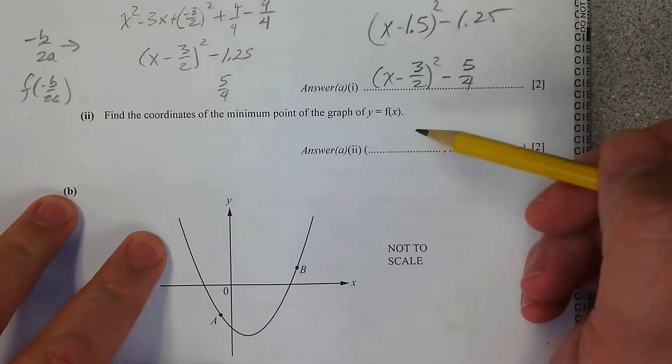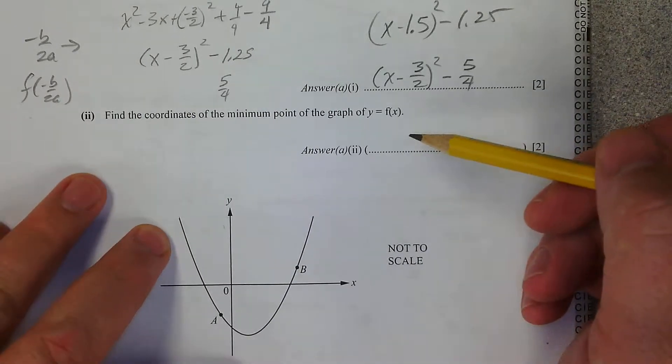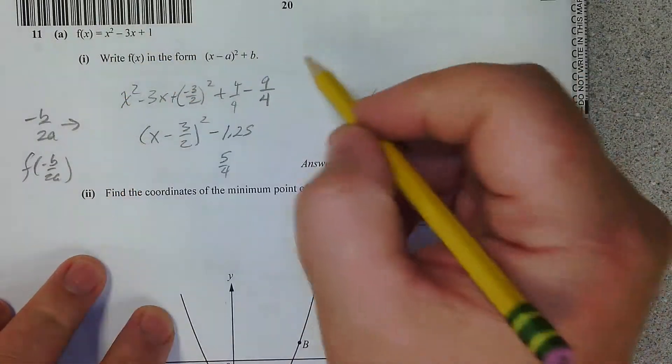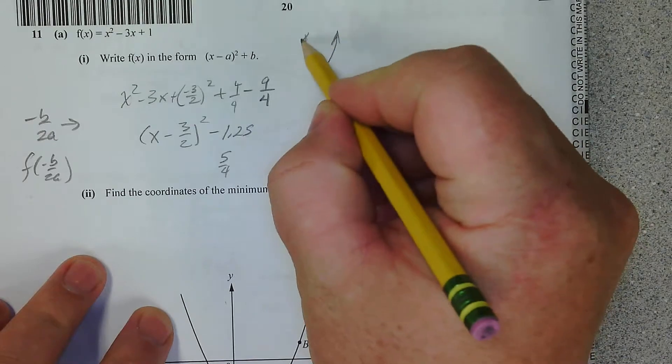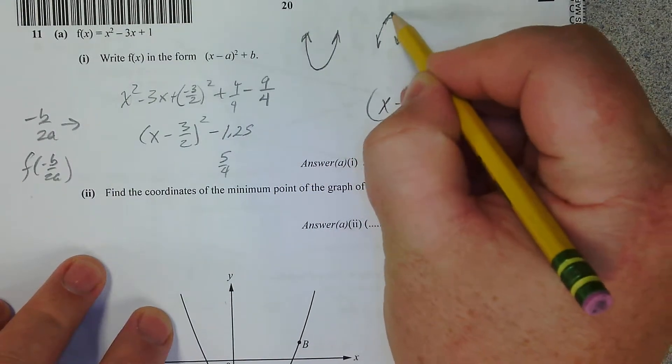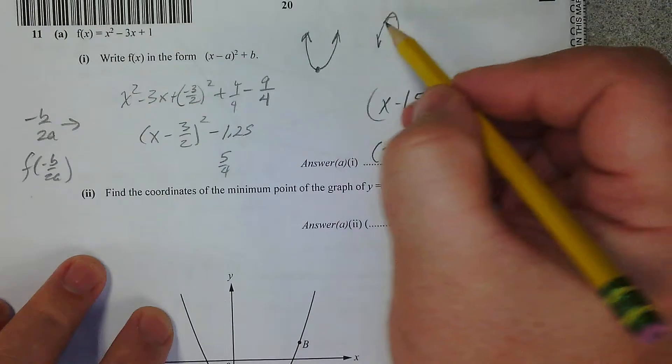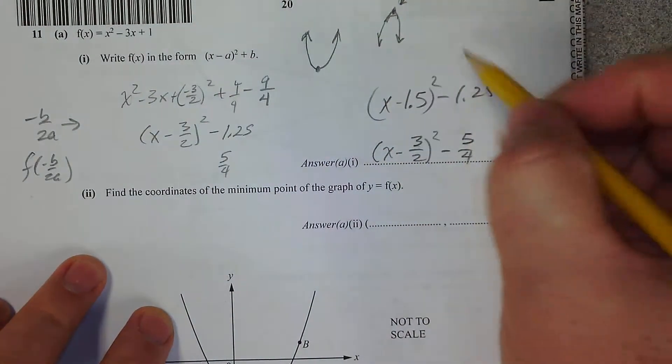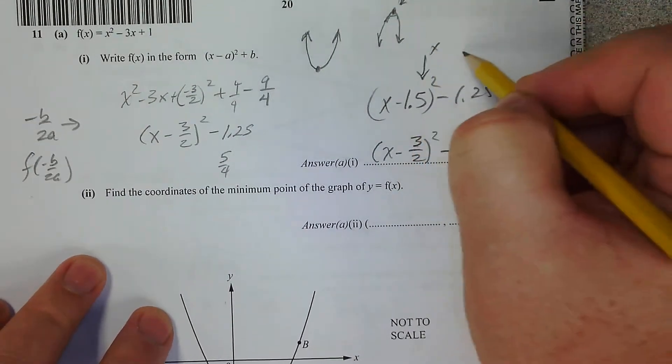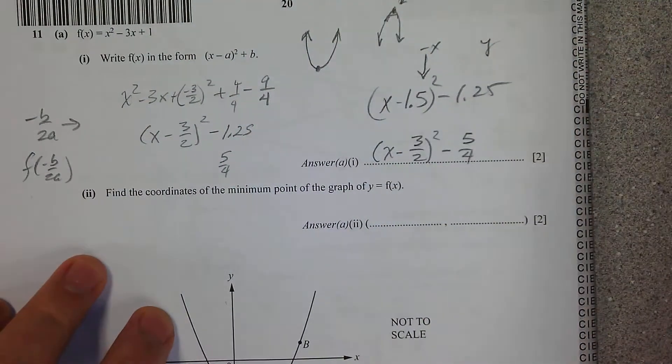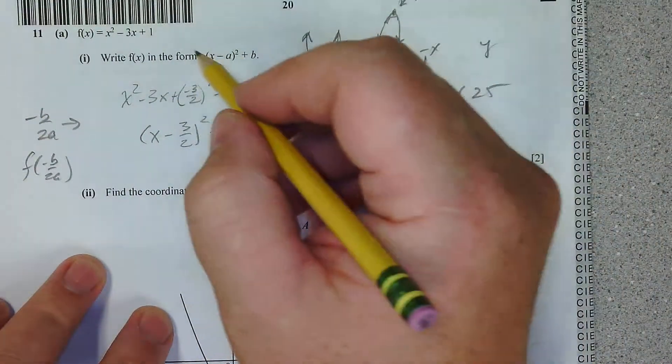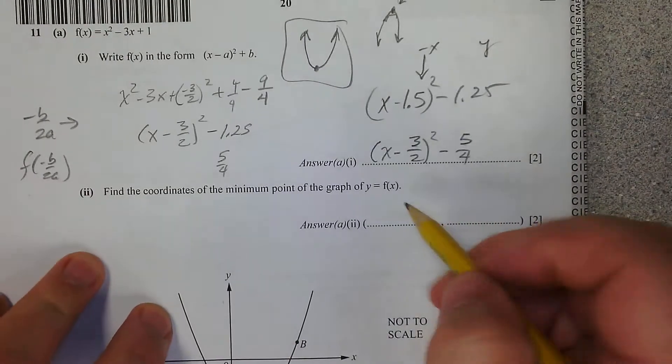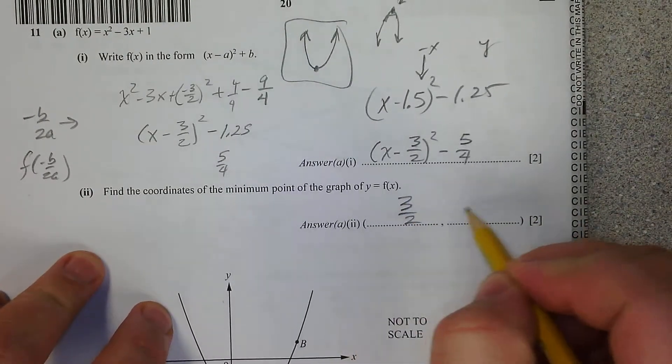Now, find the coordinates of the minimum point. The reason I know this function has a minimum is that it's quadratic, so it's going to be a parabola. It's either going to go up like this or down like that. It's either going to have a minimum or a maximum. Either way, this is the vertex. The reason I know it's going up is because the leading coefficient a is positive.